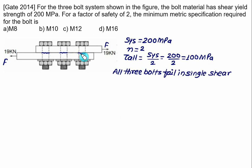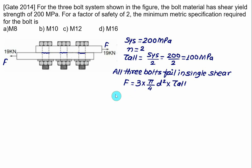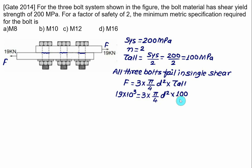All three bolts fail in single shear, so: F = number of bolts × (pi/4 × D²) × tau allowable. Substituting: 19 × 10³ = 3 × (pi/4) × D² × 100. Solving for D, taking the square root gives diameter D close to 9 mm.